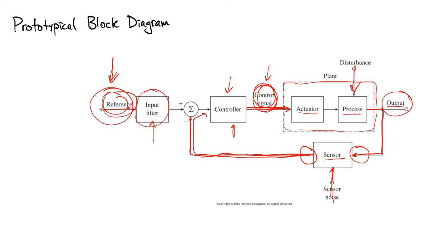The last element is a summation node. One signal comes in with a positive sign, and another with a minus sign, so even though it's called a sum it's really a difference — we're computing the difference between the reference and our sensor measurement.